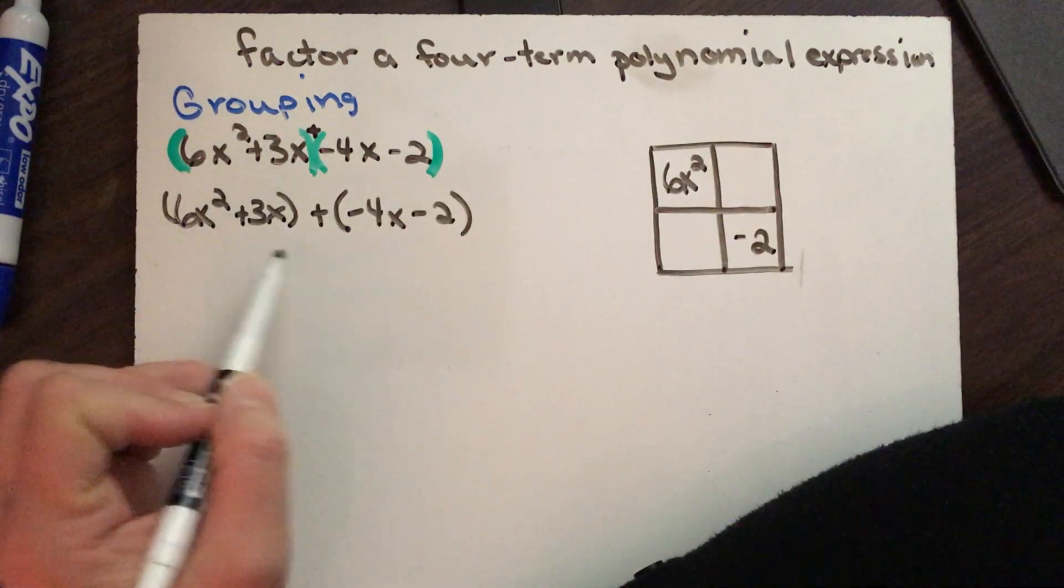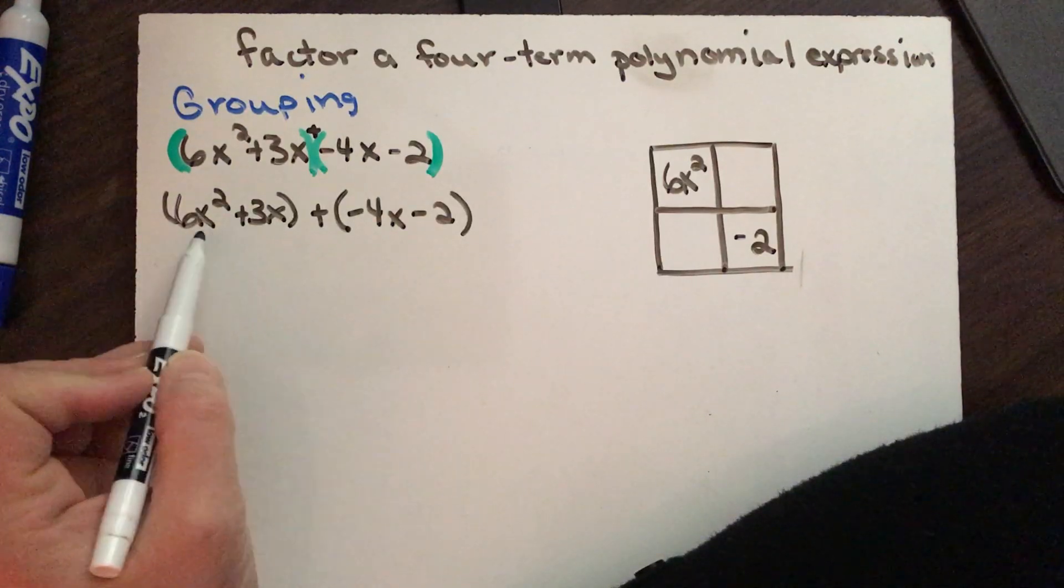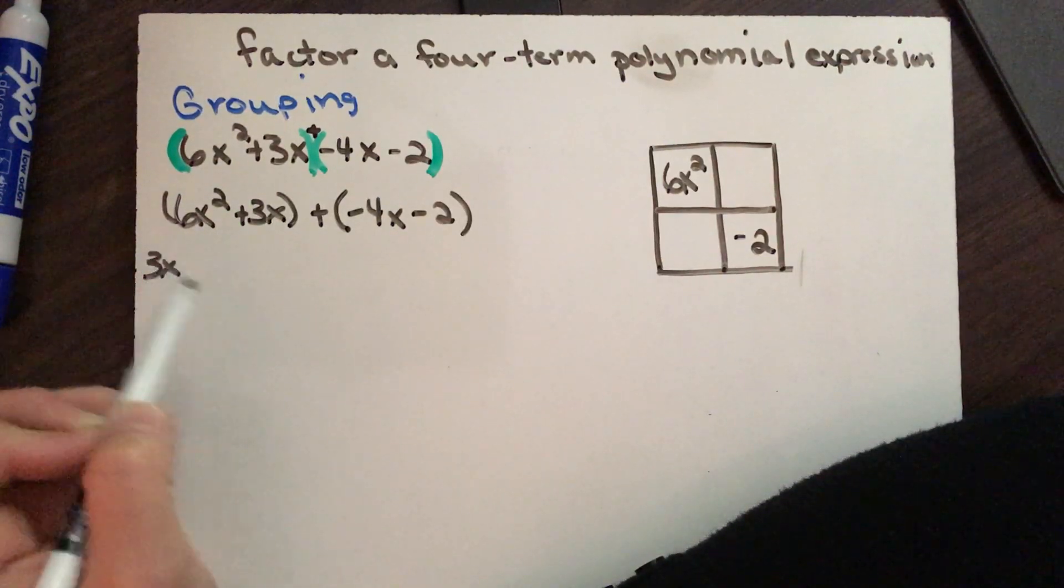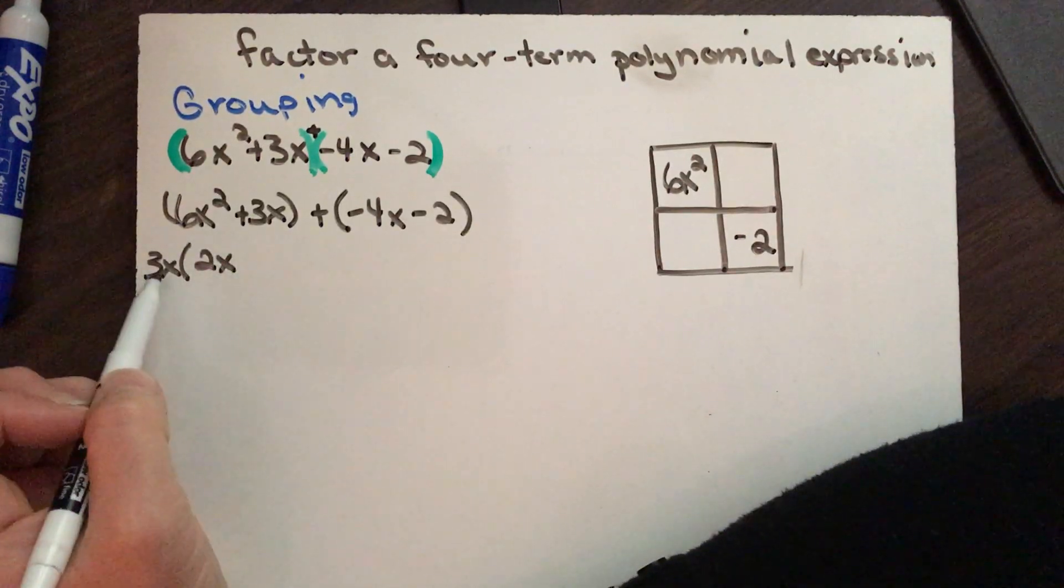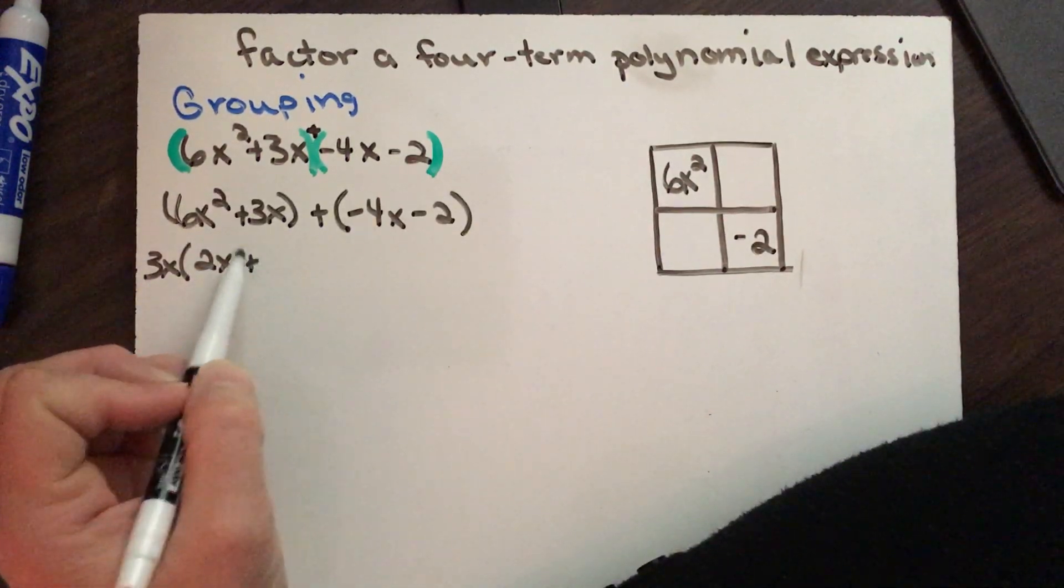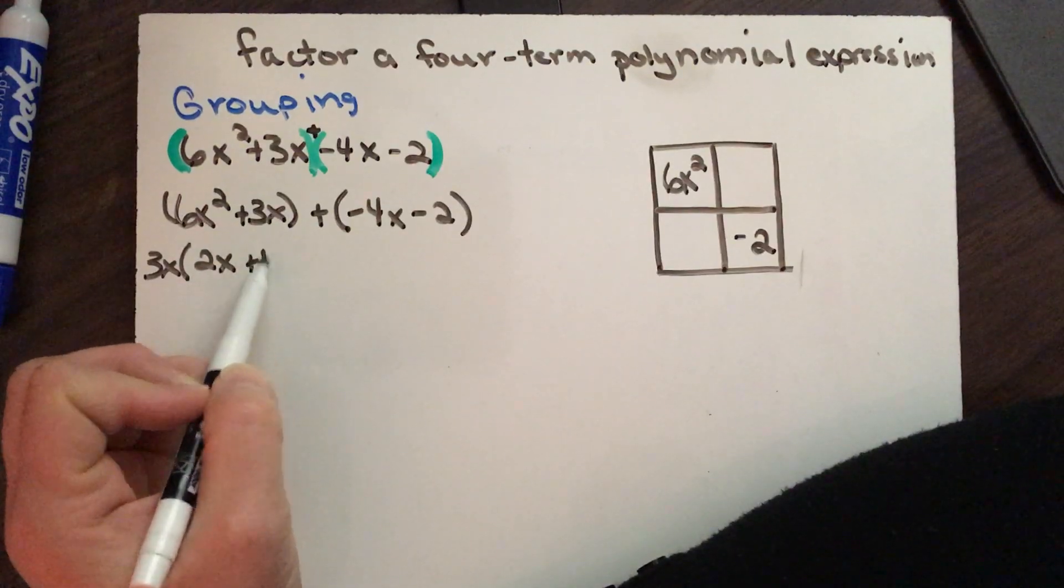Okay, so then we factor these out just like we've done before. So they both share a 3 and an x is their greatest common factor, so that leaves me with a 2 and an x. Dividing and divide that into there and you get a 1.